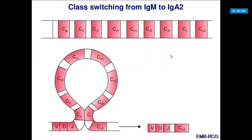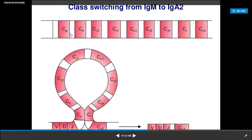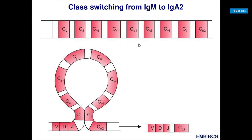Here we can see class switching from IgM to IgA2. There is a chain arrangement of Mu, Delta, gamma, and alpha. When we need the alpha chain, recombination takes place, the Mu portion is deleted, and the alpha chain is added. Through this process, class switching takes place from IgM to IgA.